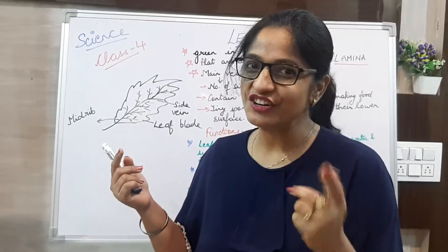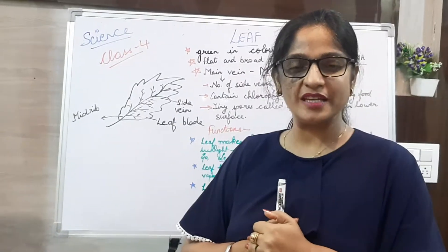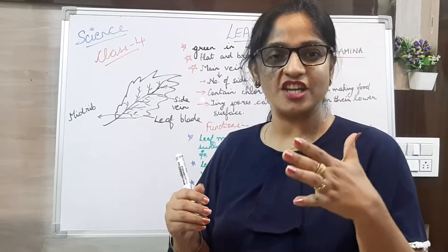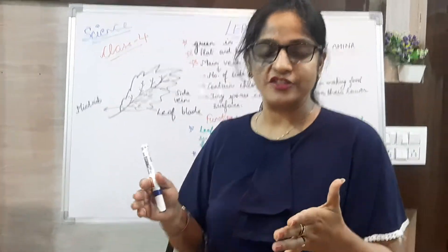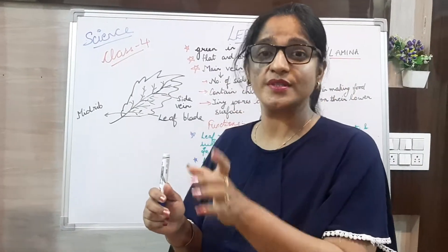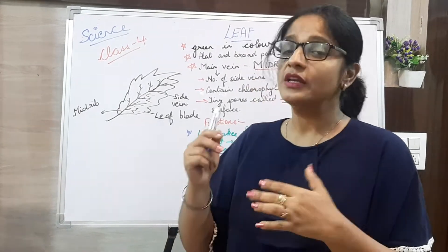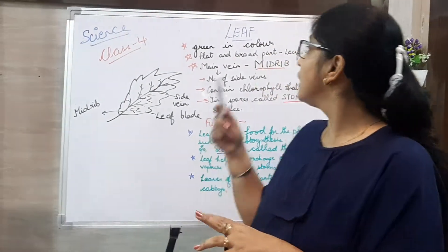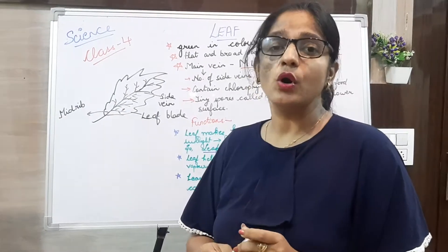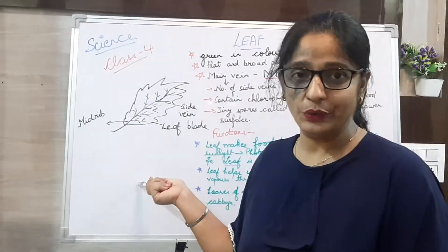My dear children of class 4, I am taking the subject science today in continuation of the chapter parts of plant. We have till now studied parts of plant: root system and shoot system. In the shoot system, the first part was stem which I already taught you, and the second part was leaf which I am going to teach you today. So today's topic is leaf, a part of a plant you already know.